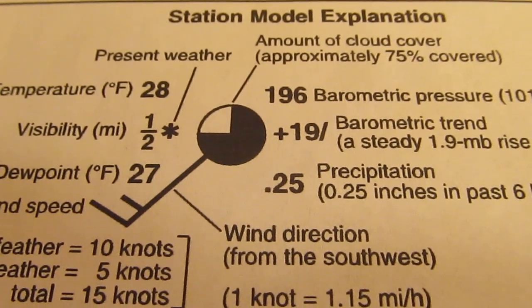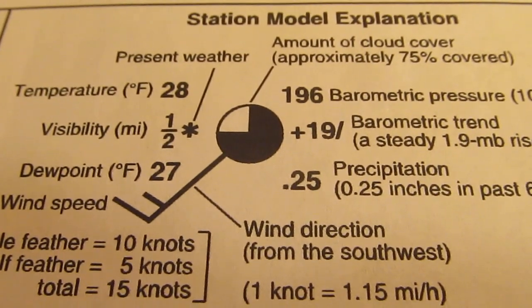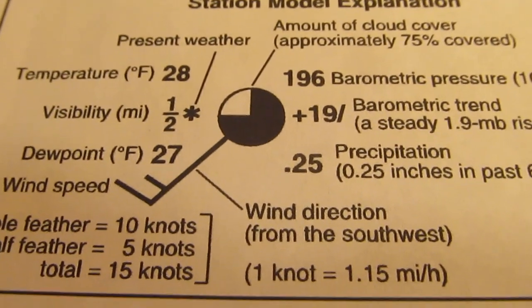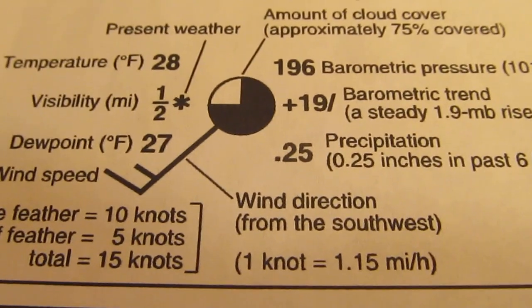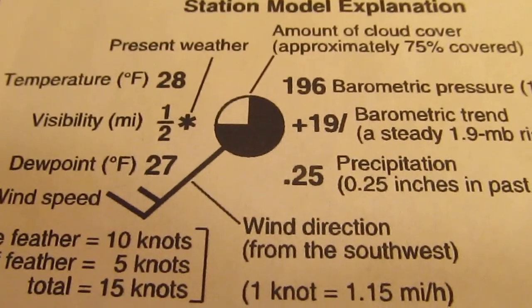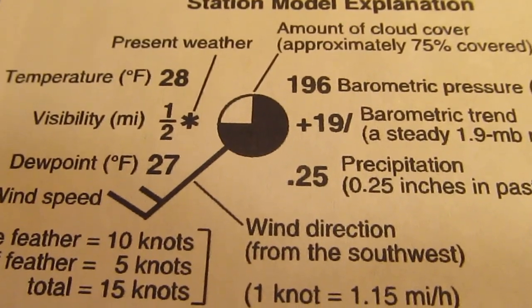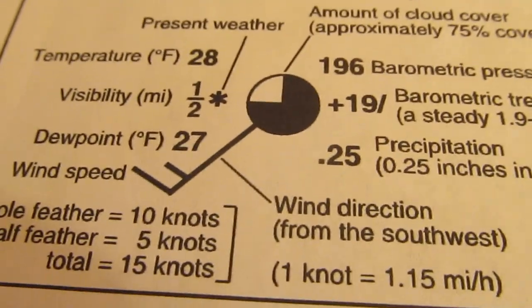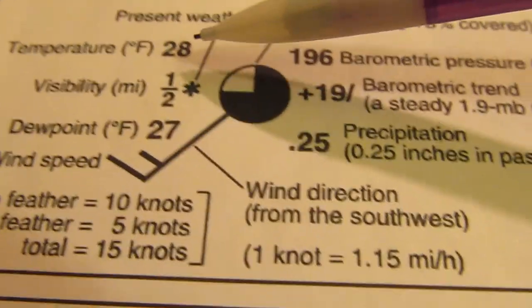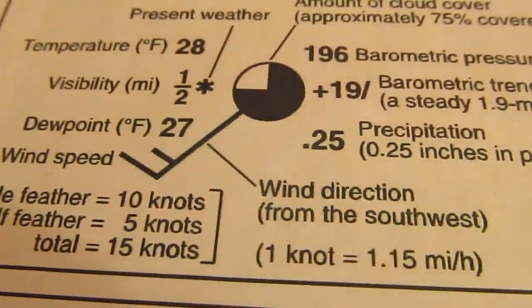So when you're looking at a weather map, they put a lot of data for a lot of locations on a map in a small area. So the goal of these weather station symbols was to put the data in there that's necessary for forecasters to do their job, but without taking up a whole bunch of space. So you can see here in the upper left corner, I'll try to hold the camera as steady as possible. You've got 28, which is temperature given in Fahrenheit.